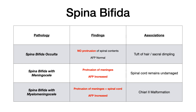Here's a summary of the three types of spina bifida. Occulta: not protruding through, no protrusion, AFP is normal — patients may show a tuft of hair or sacral dimpling. Spina bifida with meningocele: protrusion of the meninges through the low back, there's a hole so AFP will be increased, but the spinal cord is fine — it's just the meninges. Spina bifida with myelomeningocele: protrusion of both meninges and spinal cord, AFP is increased, and this is highly associated with Chiari 2 malformations.